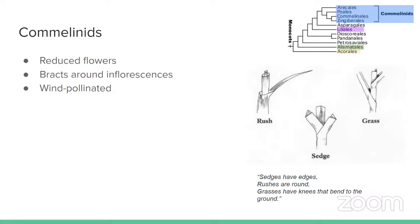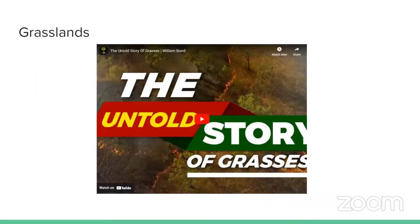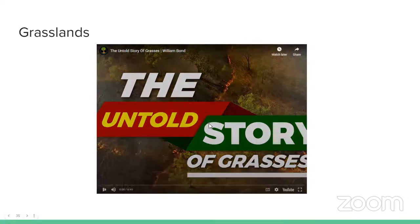Next we're going to step into the commelinids. Here we're going to see reduced flowers, a lot of bracts forming around our inflorescences, and a lot of wind pollination in this group. We're going to look at some groups that look the same — our grasses, our rushes, and our sedges, which all look like what I would call grass. There's a little poem to remember the differences: sedges have edges, rushes are round, and grasses have knees that bend to the ground. And here we have a little advertisement from the grasses.